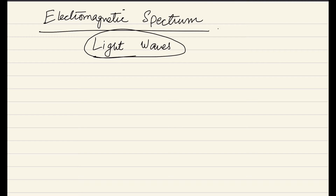So we have different types of light waves. For example, we have radio waves and we have ultraviolet waves.